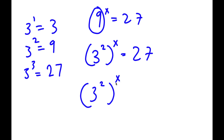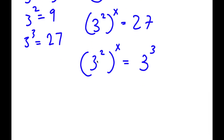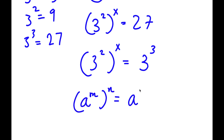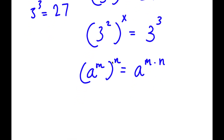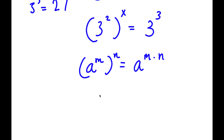So now I have 3 to the power of 2, to the power of x, is equal to 3 to the power of 3. If I have something in the form a to the power of m to the power of n, this is equal to a to the power of m times n. So 3 to the power of 2 to the power of x equals 3 to the power of 2x.